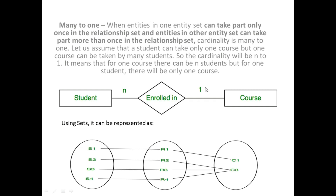Using set representation, you can see that s2, s3, and s4 are all related to c3. C3 is a course, so more than one student can participate in the c3 course. Hence the cardinality here is many-to-one.